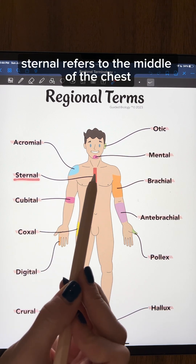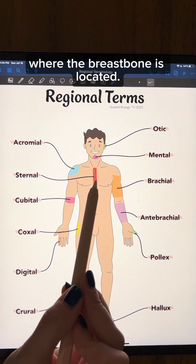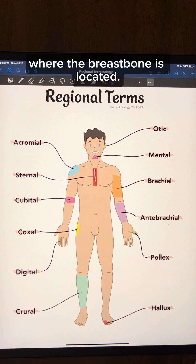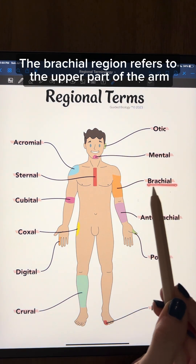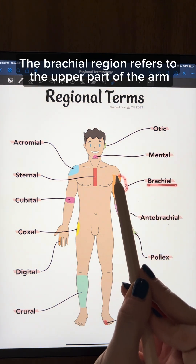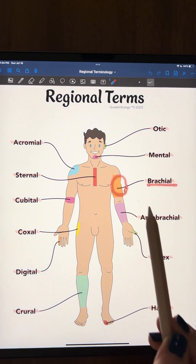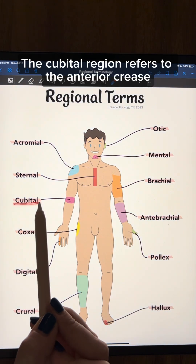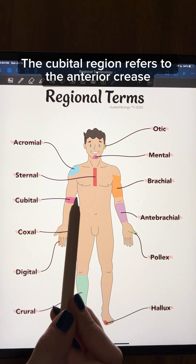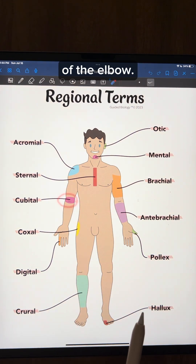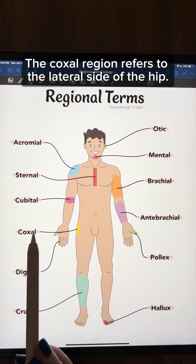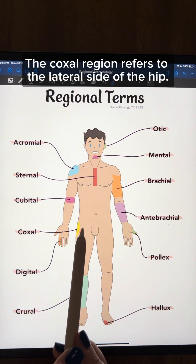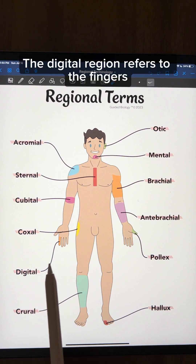Sternal refers to the middle of the chest where the breastbone is located. The brachial region refers to the upper part of the arm, and the antebrachial region refers to the lower part of the arm. The cubital region refers to the anterior crease of the elbow. The coxal region refers to the lateral side of the hip.